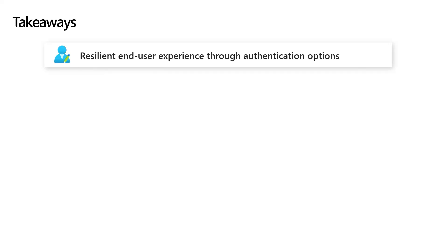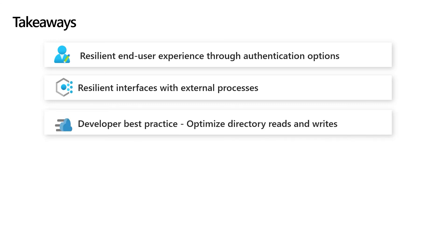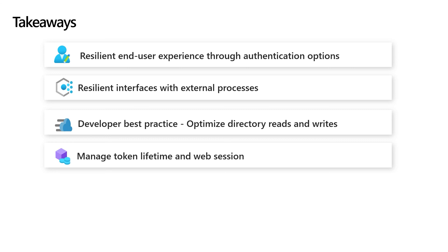The silent refresh of tokens is done through using a refresh token which the device or the application keeps in the device keychain or the app's own storage. Here are the takeaways: Building fallback plans for authentication ensures the end user experience is not disrupted during an outage of either an IDP or a phone service. Good error handling of REST APIs and downstream services helps make your service more resilient. As a developer best practice, optimizing your reads and writes to the directory avoids getting throttled. For users who are already signed in, mitigate disruption by carefully configuring token lifetime and session duration. All these methods help increase the end-to-end resilience of your service.